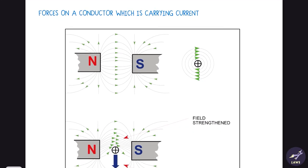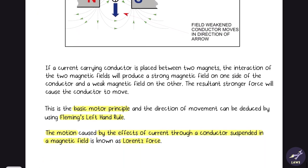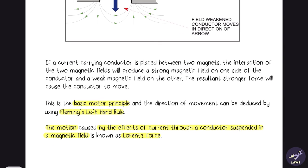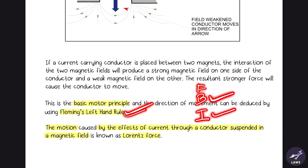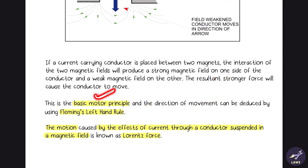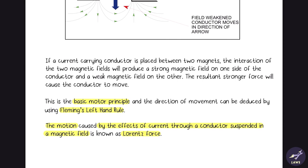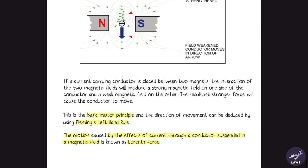Forces on a current-carrying conductor — this will be covered in detail in the next chapter. Fleming's left hand rule is based on three things: F, B, and I. Whenever current flows through a conductor in a magnetic field, there will be a force acting on the conductor. This is the basic principle on which a motor works. The motion caused by the effects of current through a conductor suspended in a magnetic field is known as the Lorentz force.